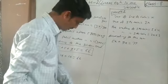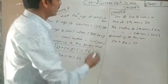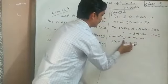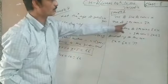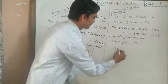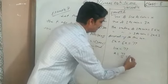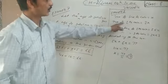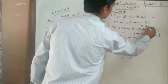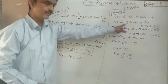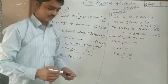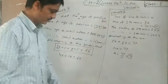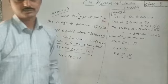It is a 2-rupee coin, not a 3-rupee coin. So the value of the 2-rupee coins is 2 times 3X, giving us 6X. Therefore, 5X plus 6X equals 11X equals 77. So X equals 77 divided by 11, which is 7. This means the number of 5-rupee coins is 7, and the number of 2-rupee coins is 3 times 7, which is 21. That is all about examples 7 and 8.